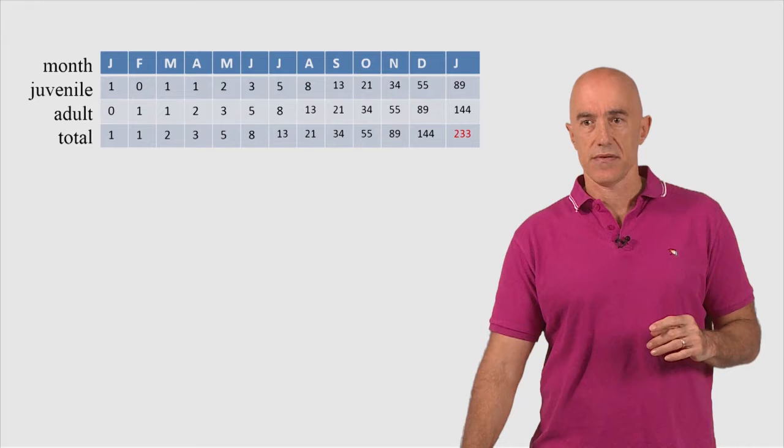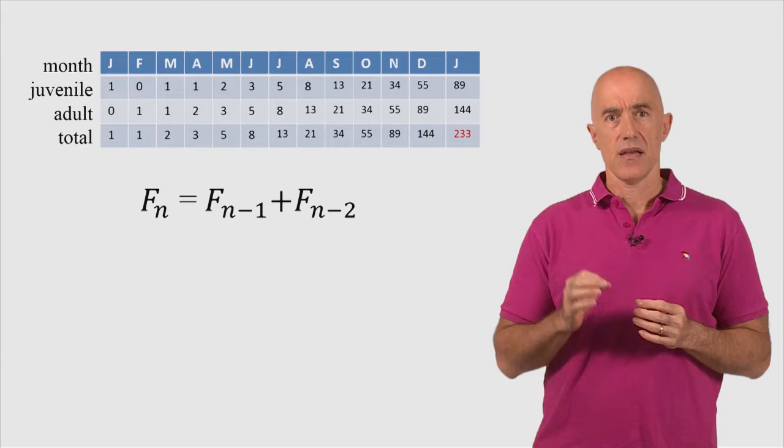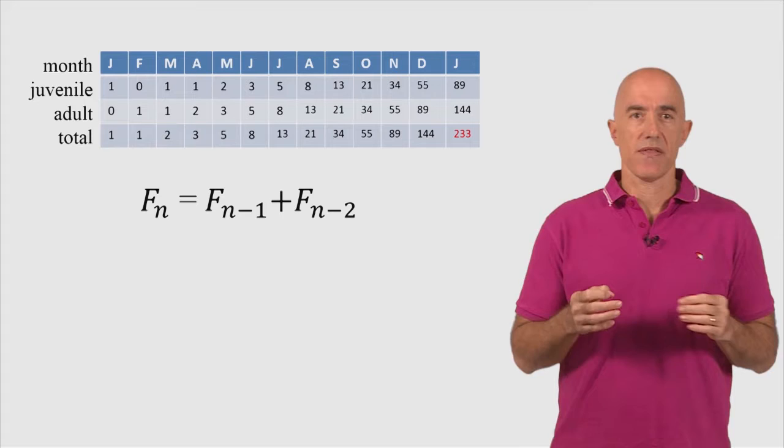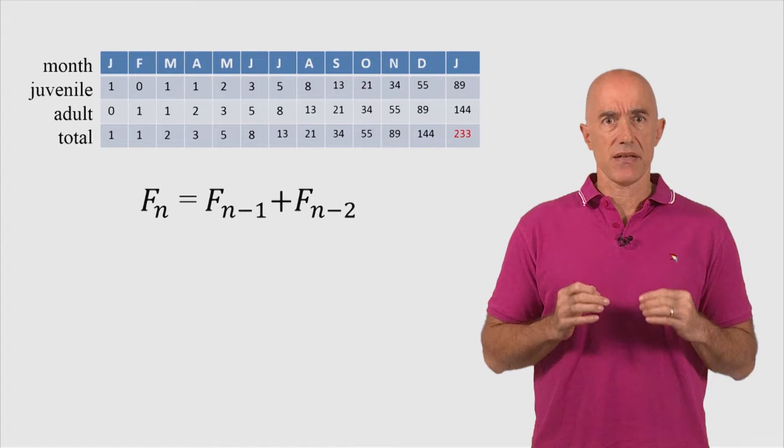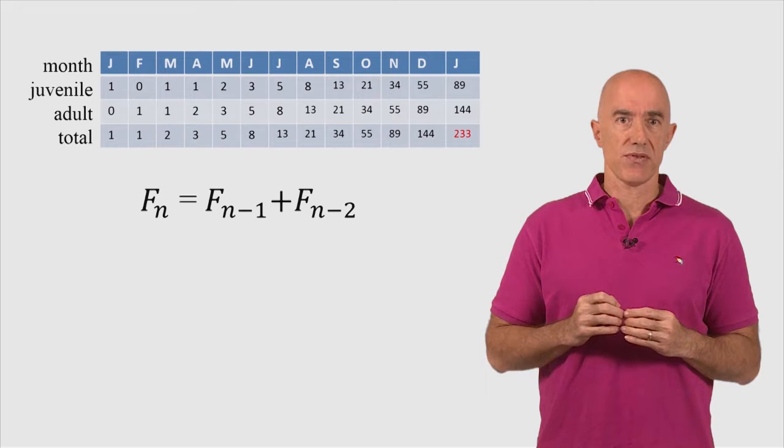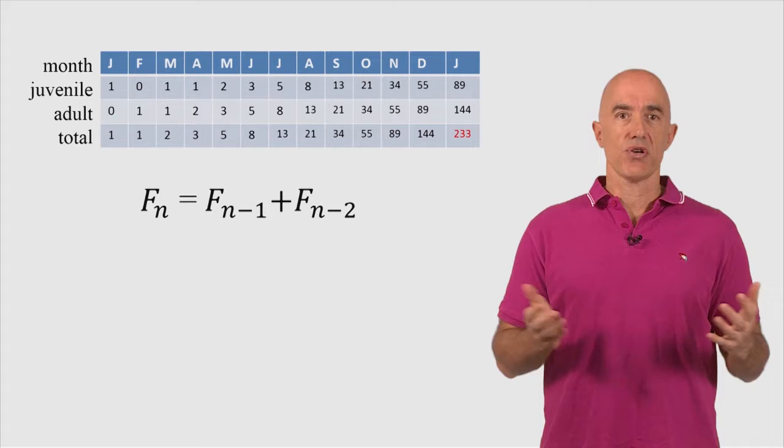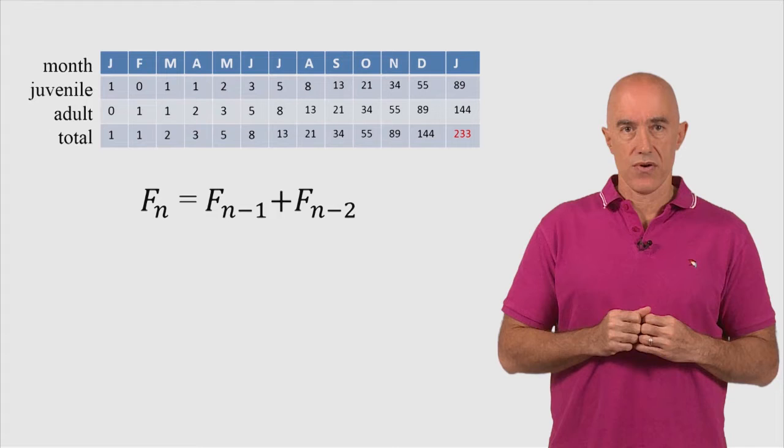We can write that as an equation. So if we call capital F sub n the nth Fibonacci number, then the equation is that F sub n, the nth Fibonacci number, is equal to F sub n minus 1, the n minus 1 Fibonacci number, plus F sub n minus 2, the n minus 2 Fibonacci number. This is called a recursion relation and is the basis of the Fibonacci sequence.